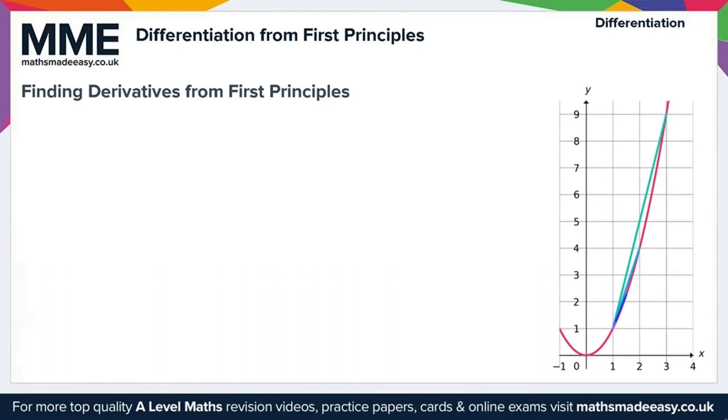Now what we'll do here first is just give the result and then we'll go on to explain that result. So to differentiate from first principles, we use the following formula. f prime of x is equal to the limit as h tends to zero of f of x plus h minus f of x, all over h.